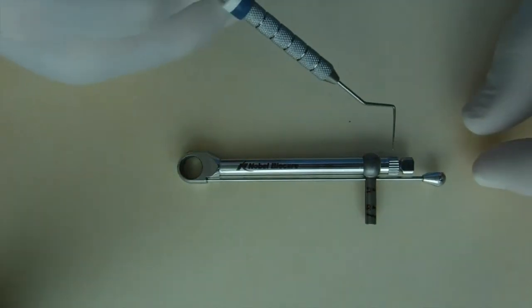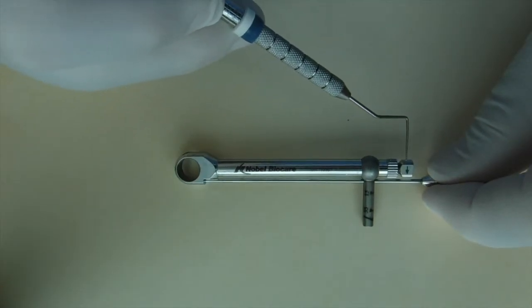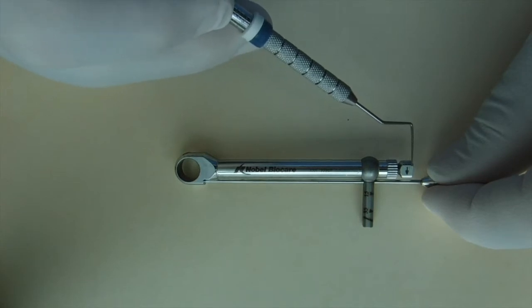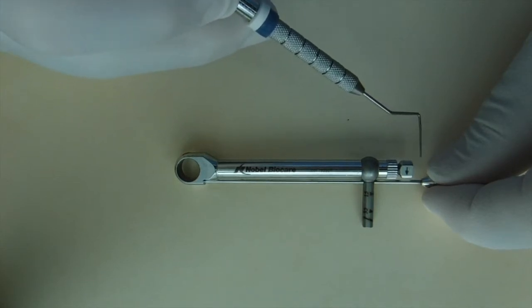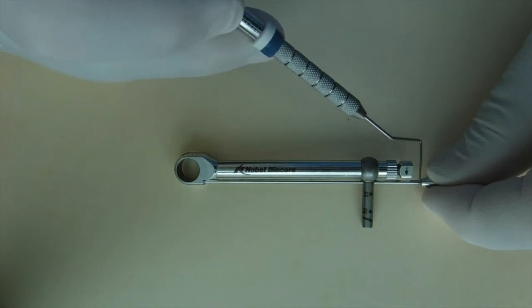You'll notice on this particular torque wrench there's a little positioning device with an arrow. This arrow should always be facing the direction in which you wish to apply the torquing force.